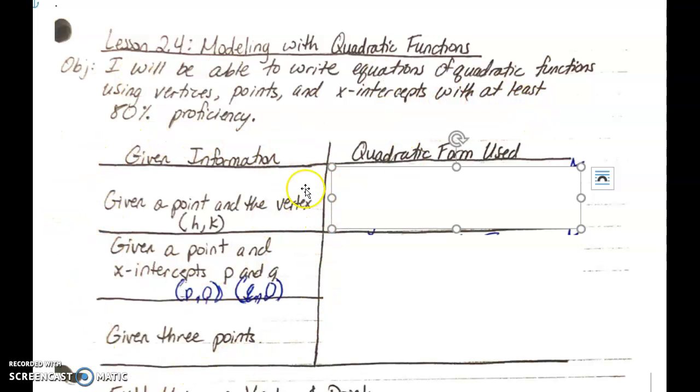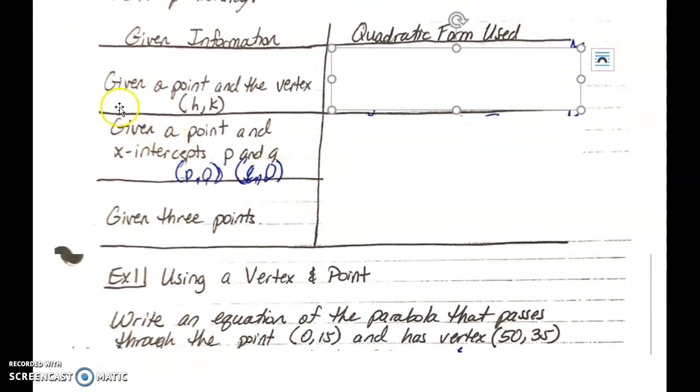So if you take a look right here under given information, you have three bits of given information that you could be looking at. So you have the situation where you're given a point and the vertex HK. You have the situation when you're given a point and the x-intercepts P and Q. And then you have the situation where you're given three points that are on the parabola. Now, depending on what information that you are given, that tells you which quadratic form to use. And that's what's really important here is that you read the information and you determine what form to use.